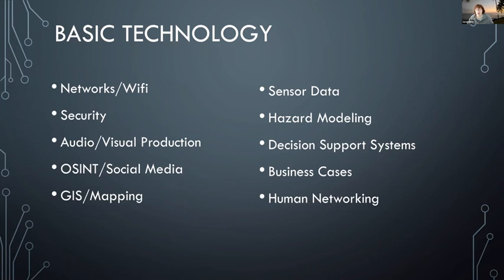Hazard modeling has advanced tremendously with technology. We can model hazards and the impact of specific hazards in specific areas. There's trial work with artificial intelligence that, based on existing data about vulnerable populations and a particular incident like an earthquake, can tell us where to send resources first — based on building permits and the types of buildings in an area — we know where we can do the most good initially.